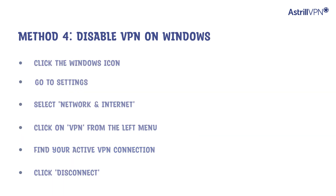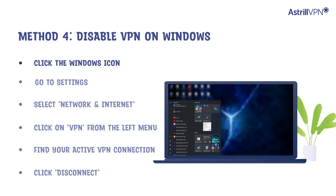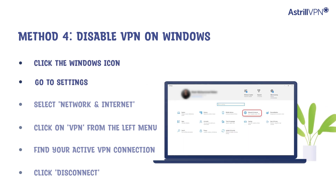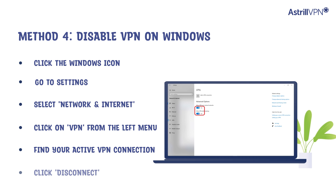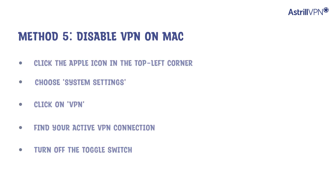Method 4: disable VPN on Windows. Click the Windows icon, go to Settings, select Network and Internet, and click on VPN from the left menu. Find your active VPN connection and click Disconnect.